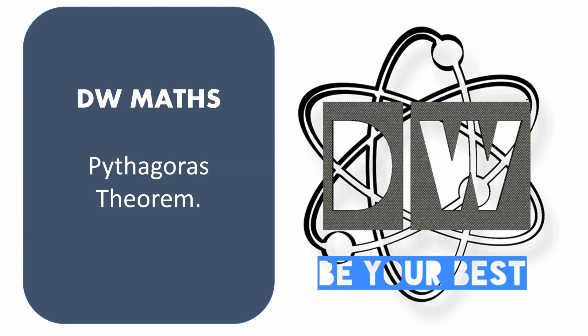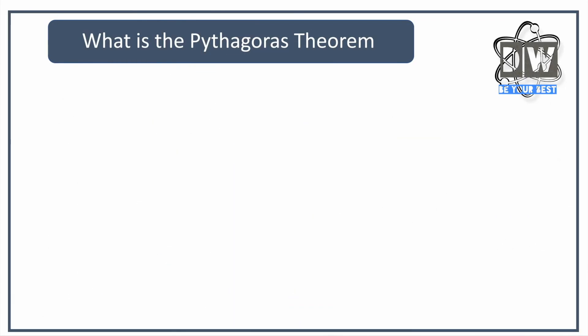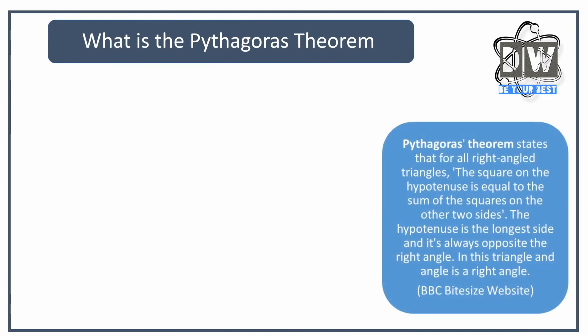Let's get into it. It's not difficult as long as we follow some simple guidelines, we'll be absolutely fine. So what is Pythagoras theorem? It states that for all right angle triangles, the square of the hypotenuse is equal to the sum of the two other sides. That's pretty much what it means.